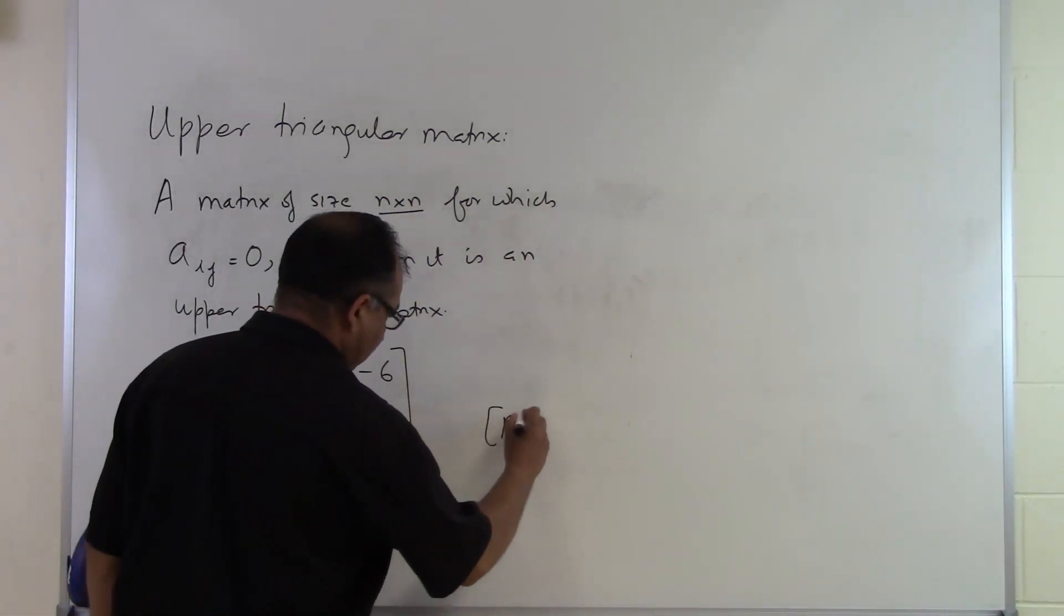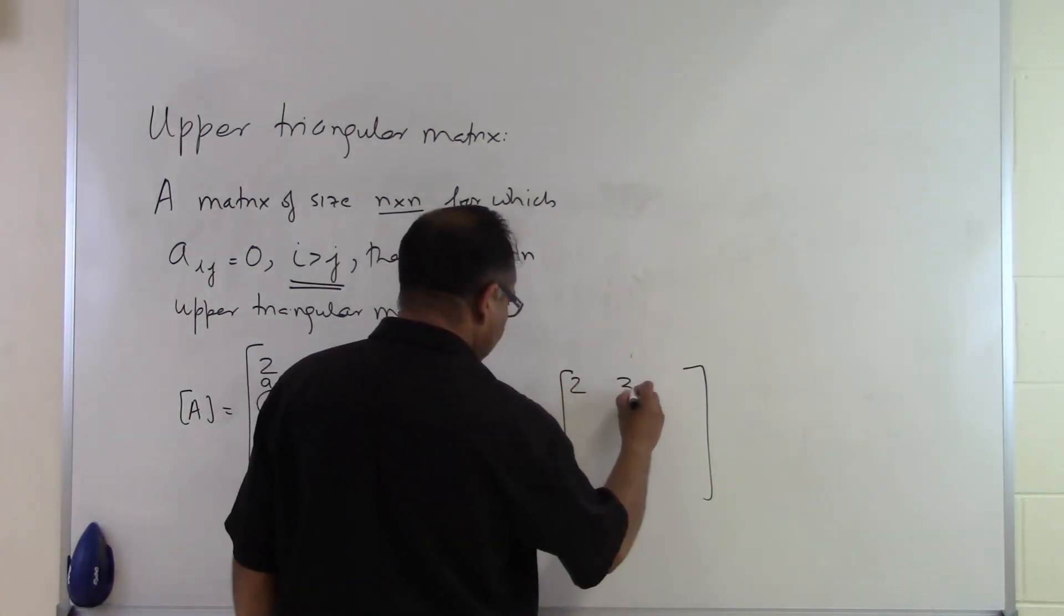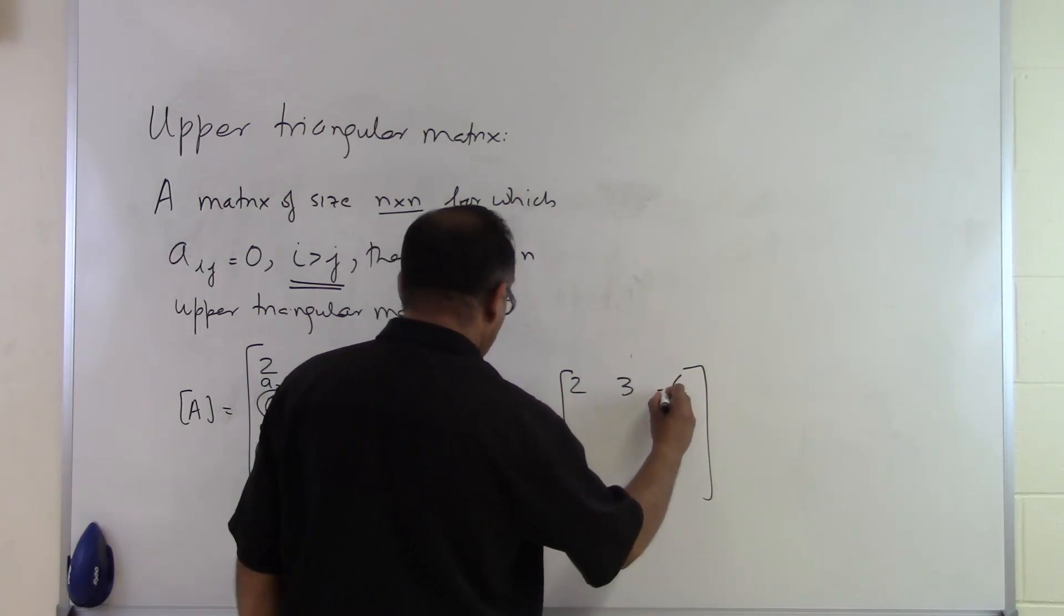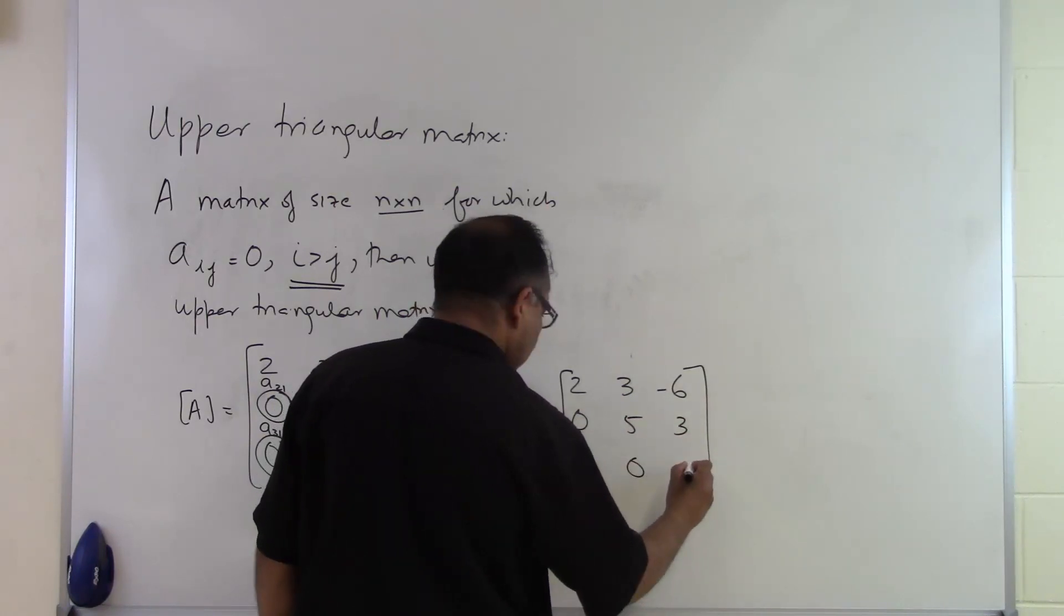Let's take another example here. B equals, I'll put the same matrix except for one small difference. I'll say 0, 5, 3, and I'll say 0, 0, 0.